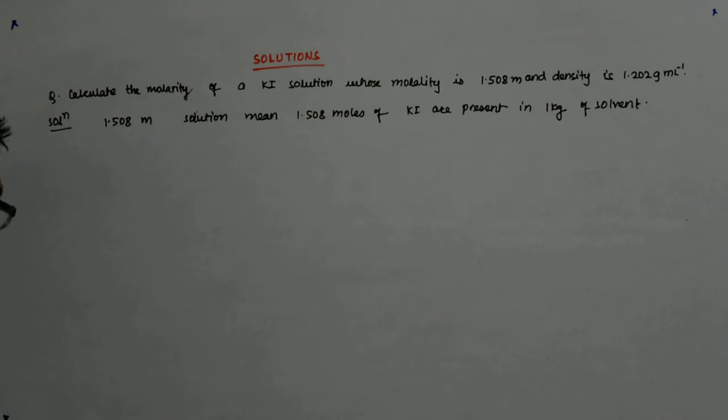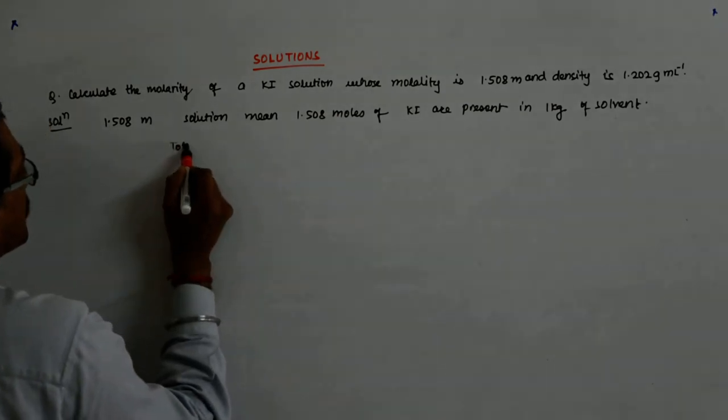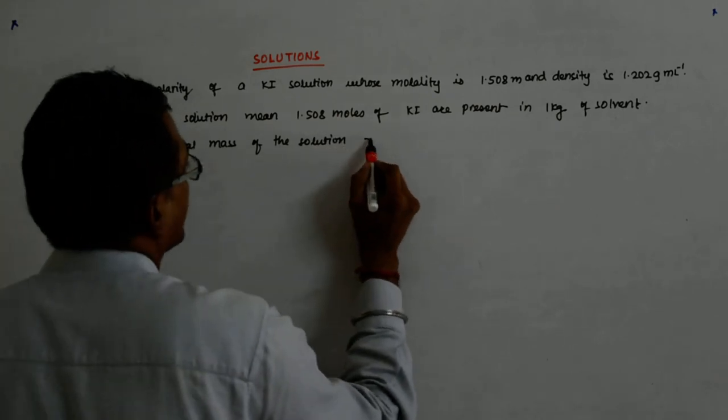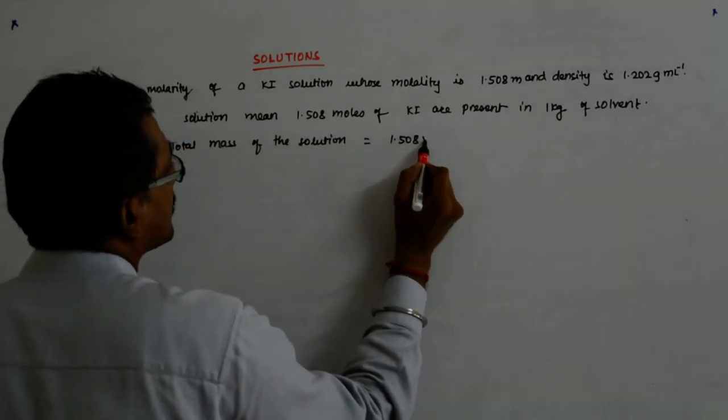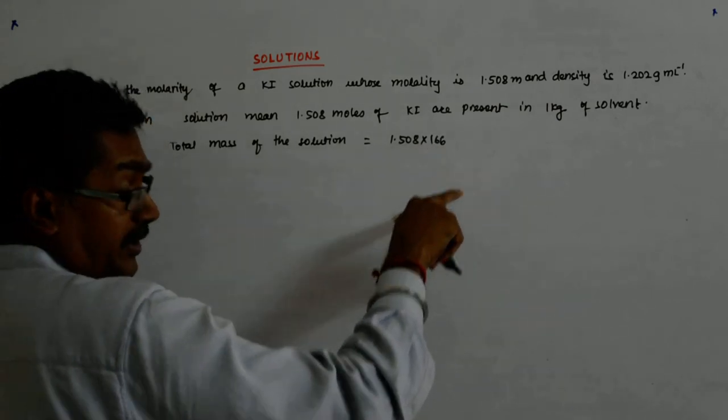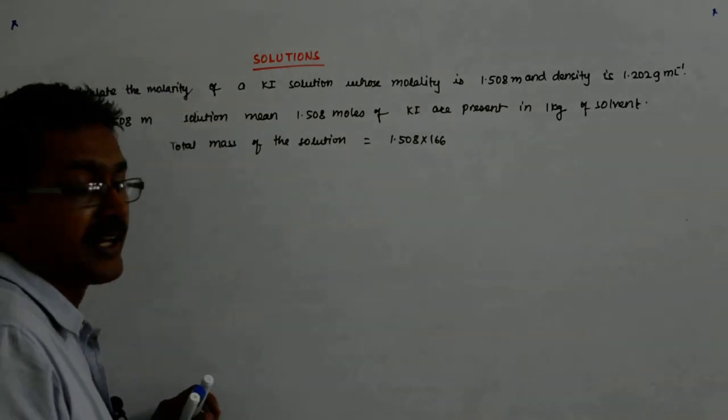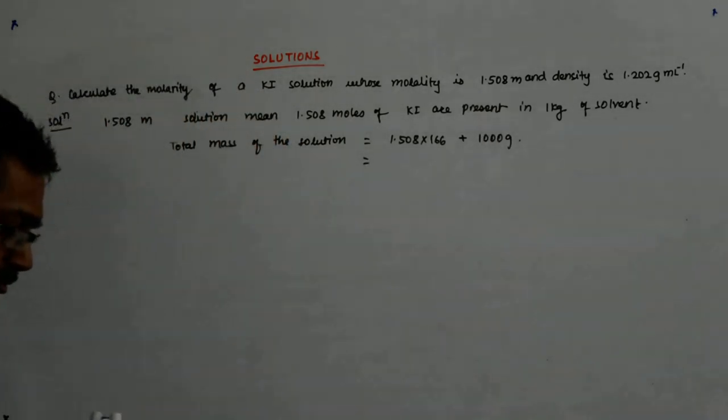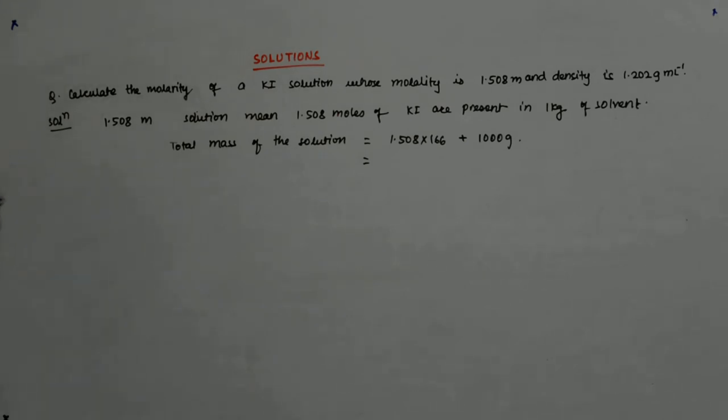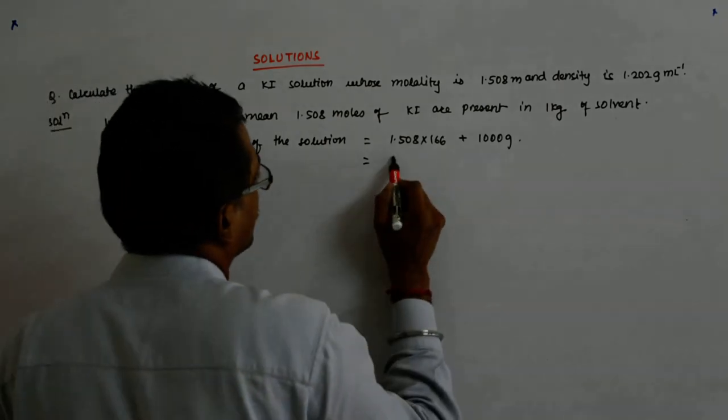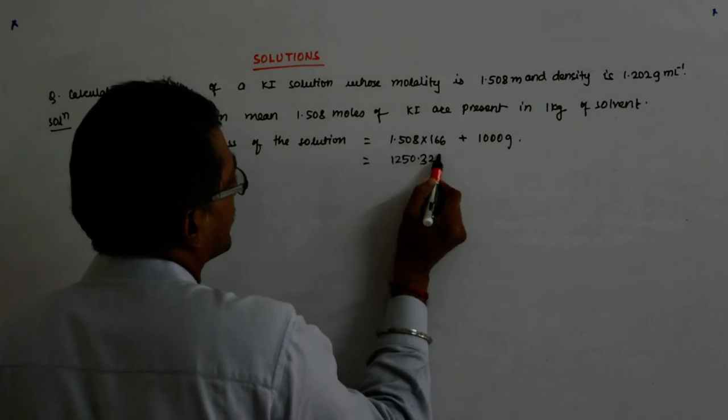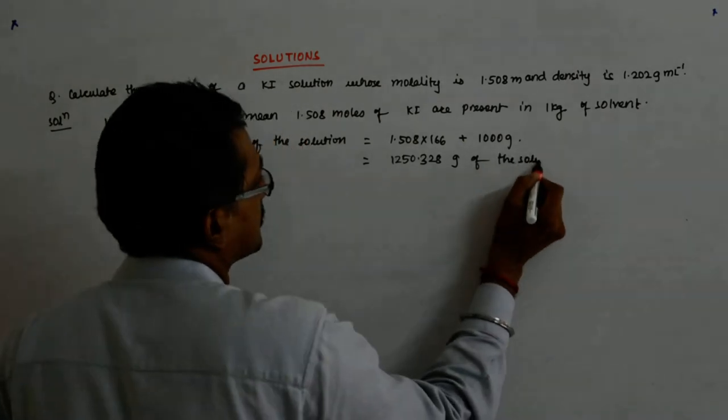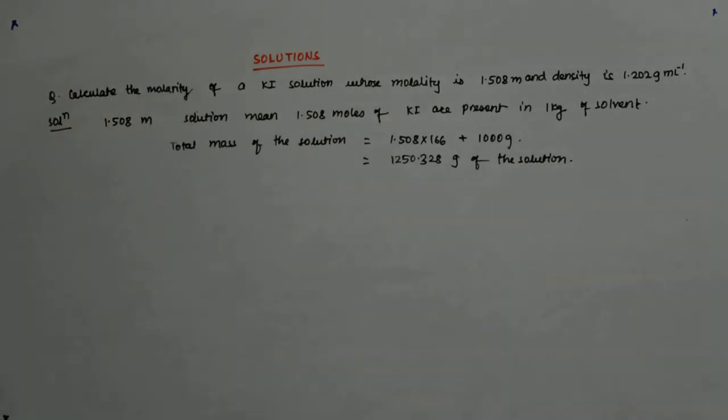So, what is the total mass? Total mass of the solution? 1.508 mols multiplied by 166, this is the molecular weight of KI. So, so much grams of KI plus 1000 grams. What is that equal to? It gives us 1250.328 grams of the solution. So, I get so much of solution.